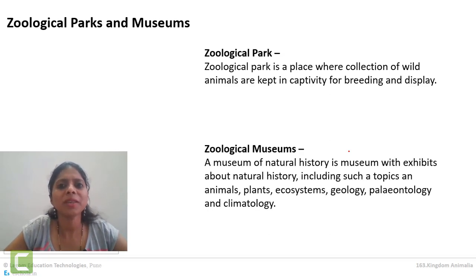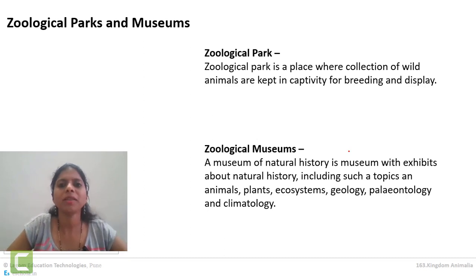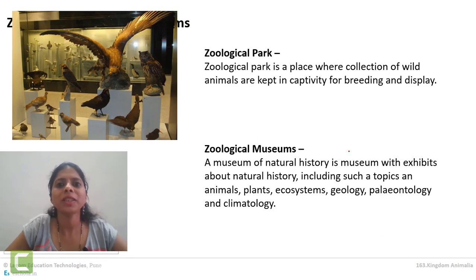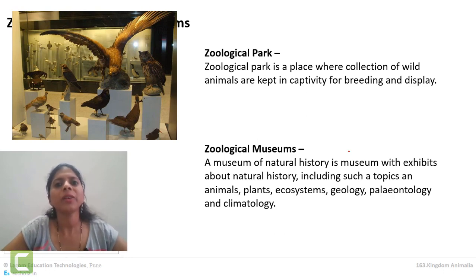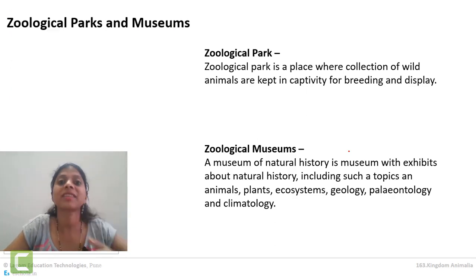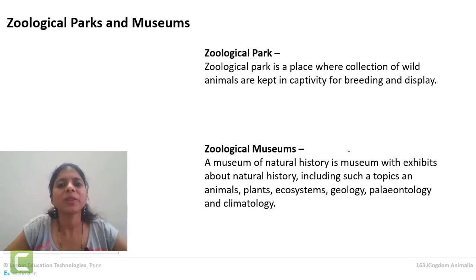Zoological museum is another place. A zoological museum is the place where live animals are not kept — all animals are in specimen form, whether in bottles, or their skeletons are preserved, or fossils. Zoological museum is the place which gives information about animals. In many zoological museums, we can even see skeletons of dinosaurs and other extinct animals. There are few zoological museums in India but there are several zoological parks.